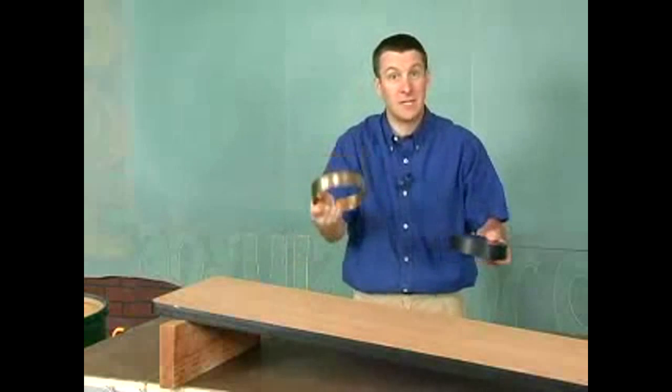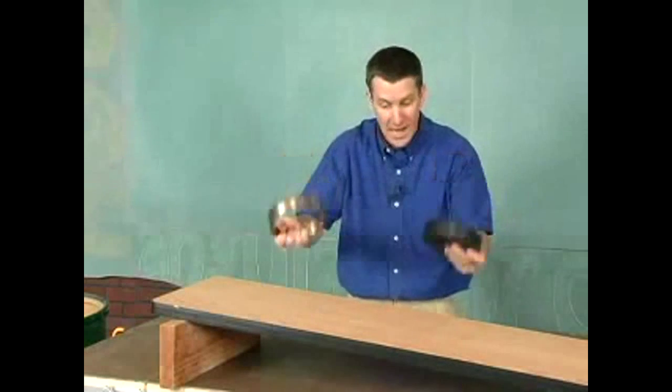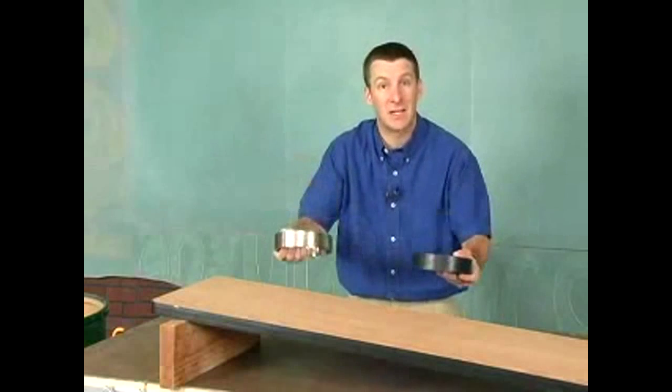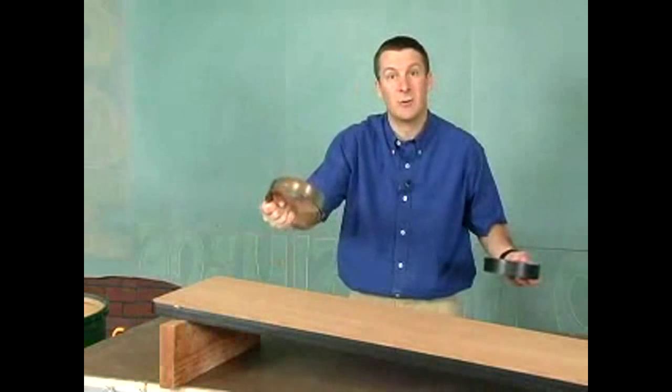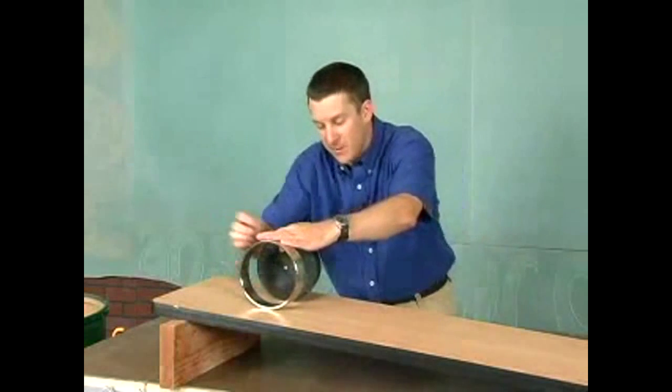And they both have the same mass. Now, for that one, you're going to have to take my word for it, but they are created to be the same mass. This one is a solid disk. This one is a steel ring. So they share many physical properties.